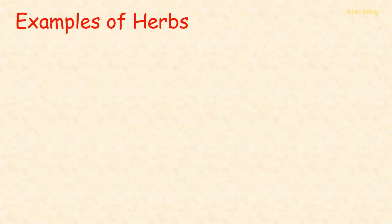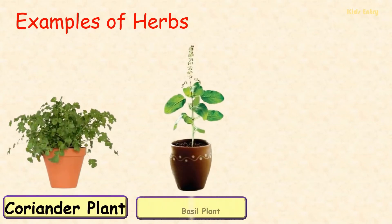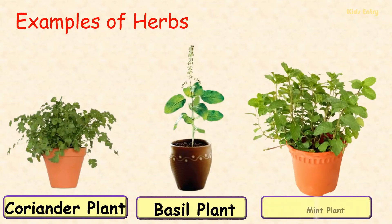Examples of herbs: Coriander plant, Basil plant, Mint plant.